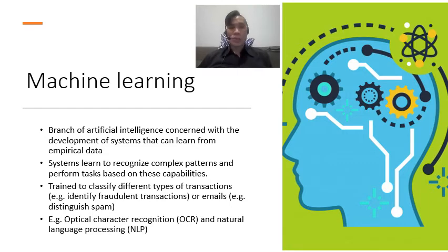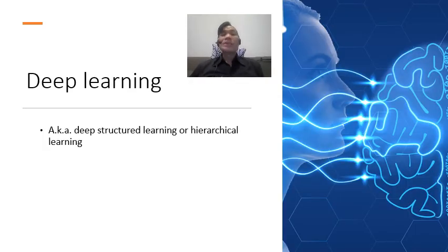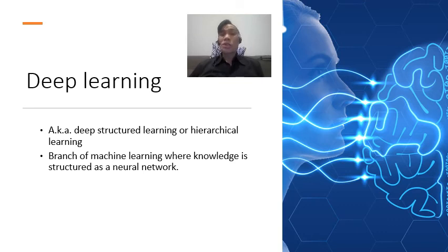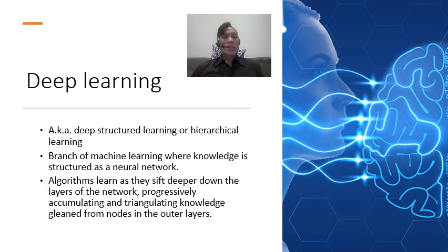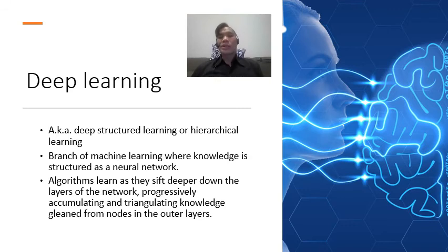Another branch is deep learning, also known as deep structured learning or hierarchical learning. Deep learning is the branch of machine learning where knowledge is structured as a neural network connected through directions and connections, just like a graph. The algorithms within deep learning learn as they sift deeper down through the layers of the network, progressively accumulating and triangulating knowledge gleaned from nodes into the outer layers. Essentially it tells you the interconnectivity of all the information and gives you a web graph to show what is connected with what, and even the strength of those connections.